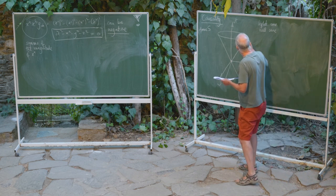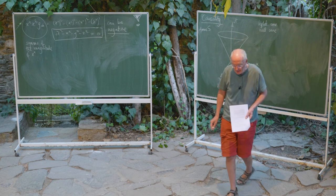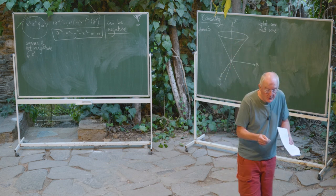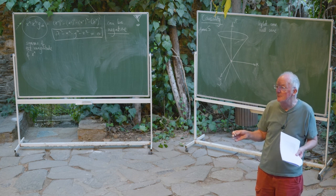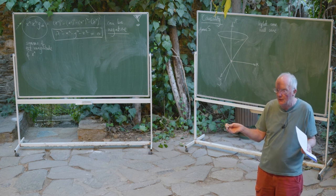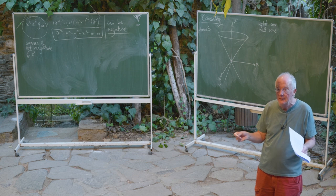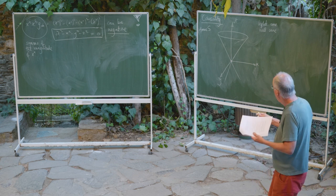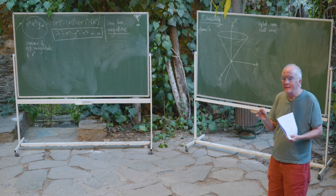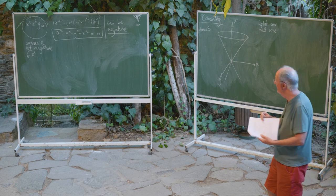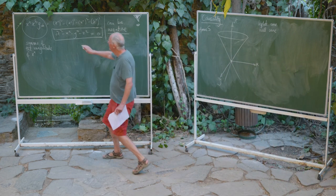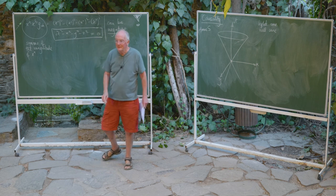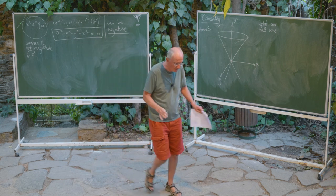If you draw ct squared equals x squared plus y squared — ignoring z — then you get a cone. With the ct axis going up, the cone will be at 45 degrees, and it goes on down below too, so it's a double cone with its vertex at the origin. This is a very famous object — it's called the light cone, or the null cone. At the origin of any inertial frame of reference there is one of these cones, and they're invariant under the Lorentz transformation because the quantity ct² − x² − y² is invariant.